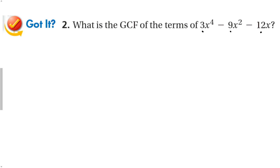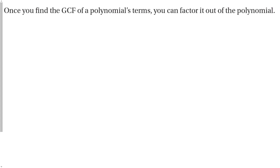For another example, the biggest number that goes into all three terms: 3 is prime — does 3 go into all of them? Yes. So the GCF includes 3. The smallest exponent is x, so the GCF of this expression is 3x. Once you find the GCF of a polynomial's terms, you can factor it out of the polynomial.